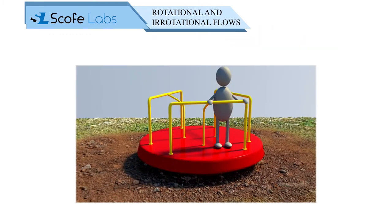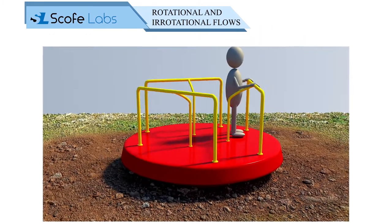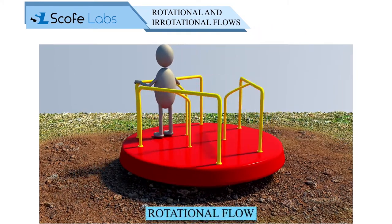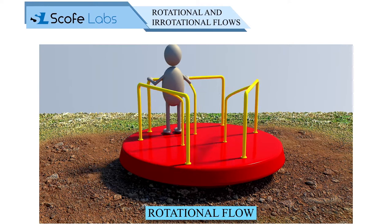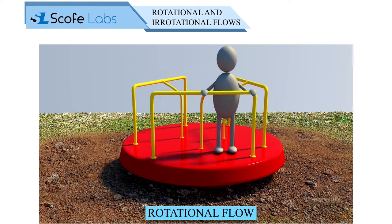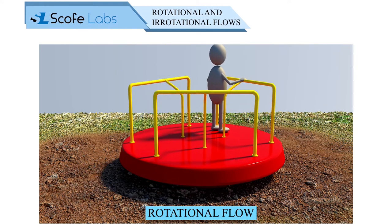Riding in the merry-go-round ride is one example of rotational flow, where the rider also rotates about their own axis.